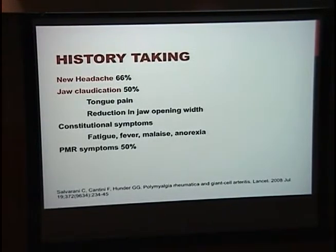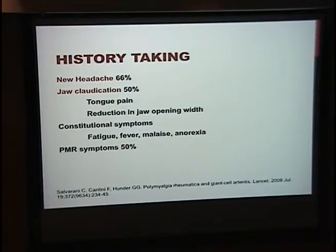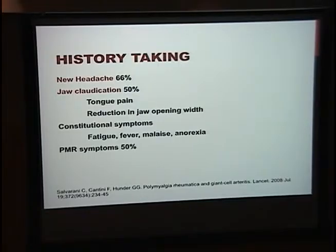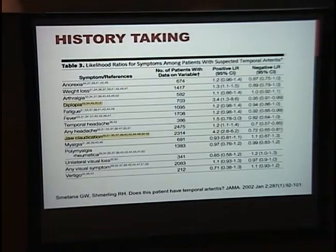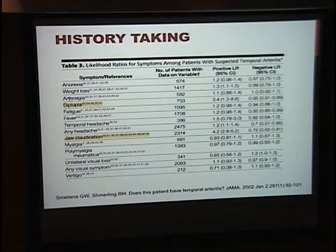When you occlude a vessel, you get symptoms. The most common symptoms in giant cell arteritis by far are a new headache and jaw claudication. The new headache can be temporal pain, but can also be elsewhere. The jaw pain isn't just pain in the jaw — it's pain when chewing. PMR symptoms are essentially arthritic symptoms in the proximal joints. Symptoms with higher likelihood ratios for diagnosing temporal arteritis are diplopia and jaw claudication.